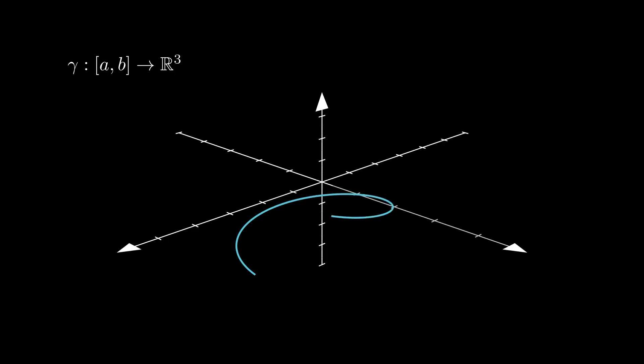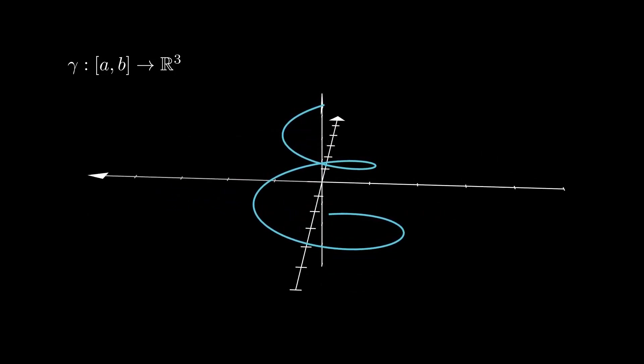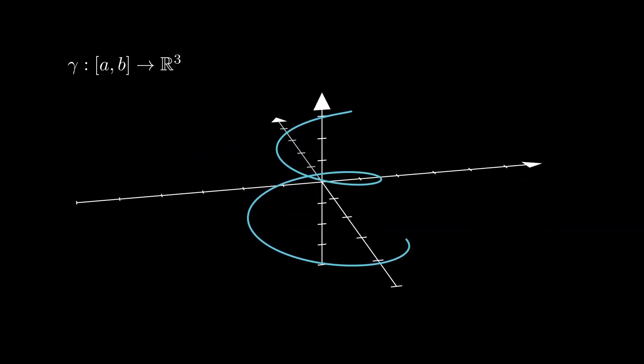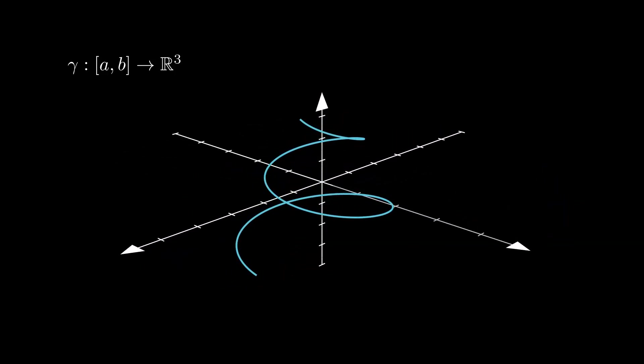Now it is time to start talking about three-dimensional curves. A three-dimensional curve is a continuous function that takes a real interval to the three-dimensional space. Just like in the two-dimensional case, we can think of this function as three separate continuous real functions put together: x, y, and z. Basically, everything we have done so far for two-dimensional curves works as well for three-dimensional curves, with the notable exception of the Jordan curve theorem mentioned in the first lesson.